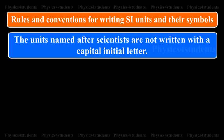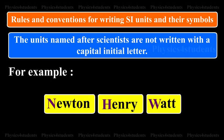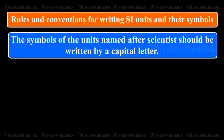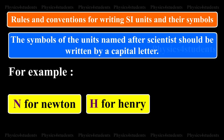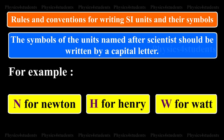The units named after scientists are not written with a capital initial letter. The symbols of the units named after scientists should be written by a capital letter. For example, N for Newton, H for Henry, W for Watt.